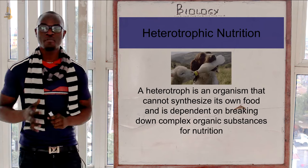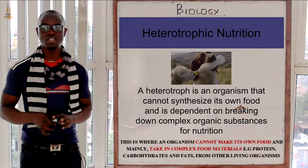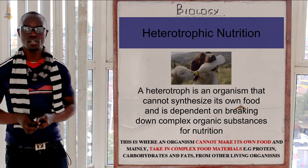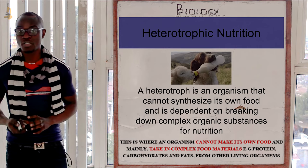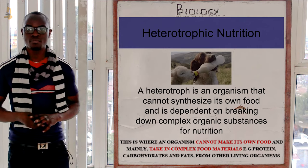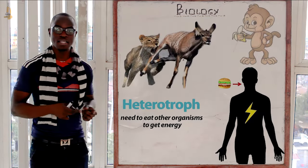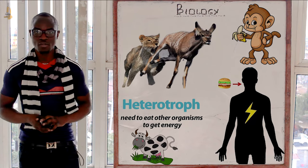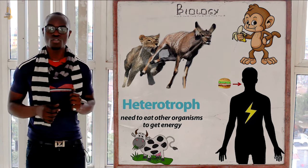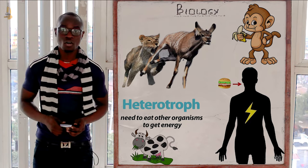Now let's look at the second mode of nutrition: heterotrophic nutrition. This is the process by which organisms obtain or take in complex food materials — such as proteins, carbohydrates, and fats — from other living organisms. They must find and ingest those organisms to obtain the nutrients. Organisms that use the heterotrophic mode of nutrition are called heterotrophs.